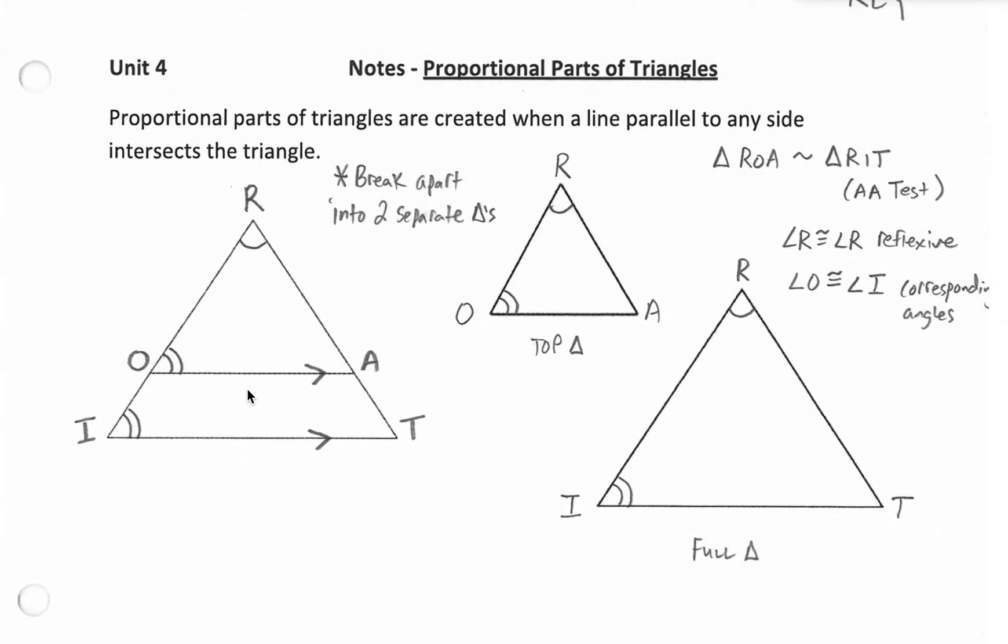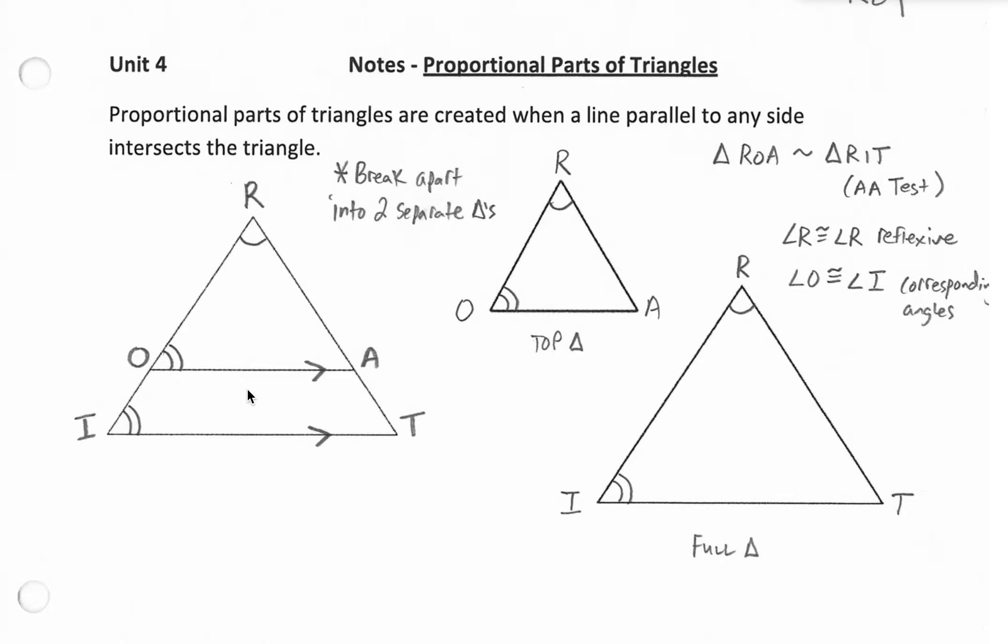One of the ways that we can prove that we have proportional parts or similar triangles is if we think about breaking apart this triangle. So let's take this top smaller triangle out of the entire bigger triangle, relabel that tiny triangle with R, O, and A here, and make sure we relabel that big triangle with R, I, and T. So now we have our vertices lining up for what we want there.